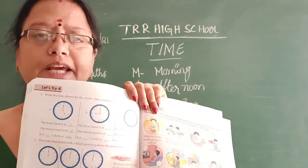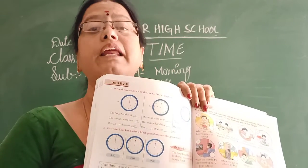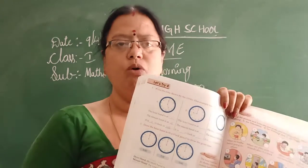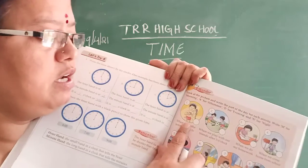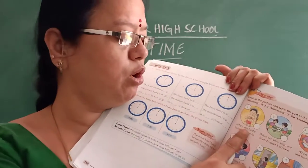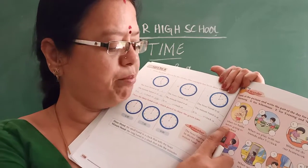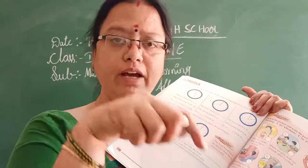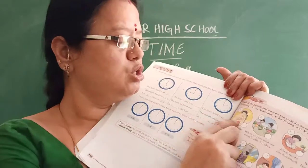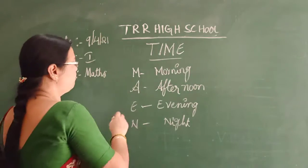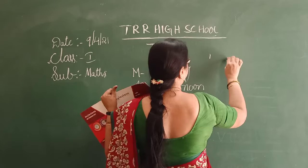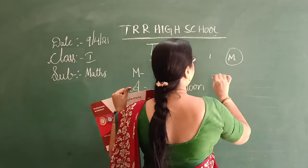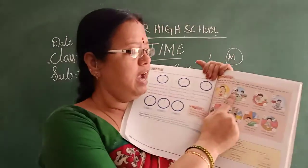See these activities and write the letter: if it is evening write E, morning write M, night write N. In the first picture, what is the boy doing? When we bathe before going to school — that is morning. So in the first circle you have to write M for morning.